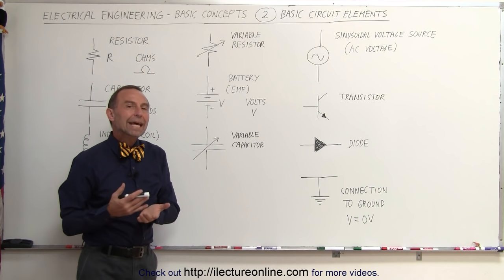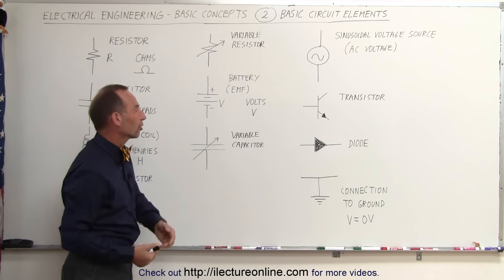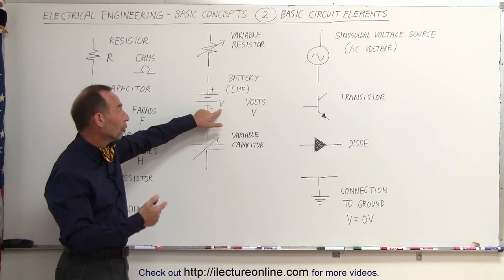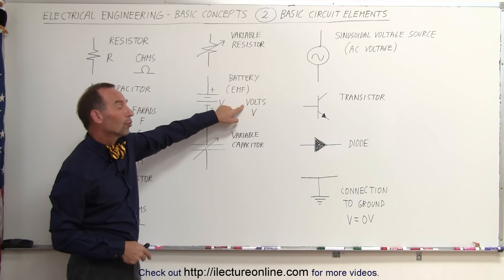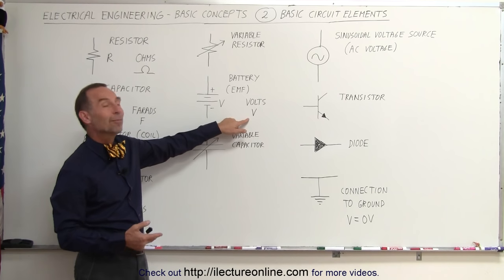Sometimes we also call the battery the EMF, the electromotive force, because it basically forces current through the circuit. We use the letter V to indicate volts for the battery, and that's also then the units. The units and the symbol for the battery is actually the same. We use volts.